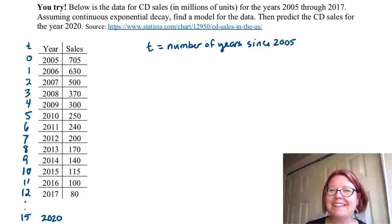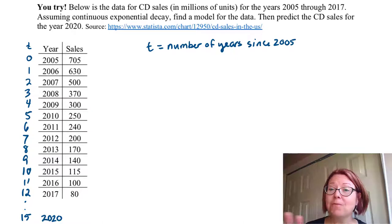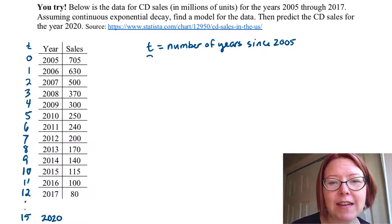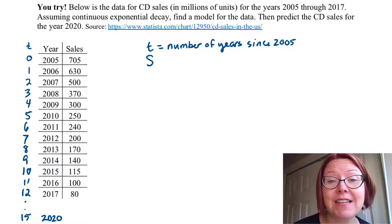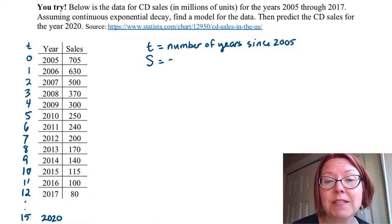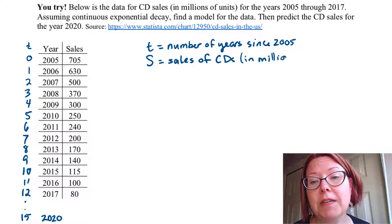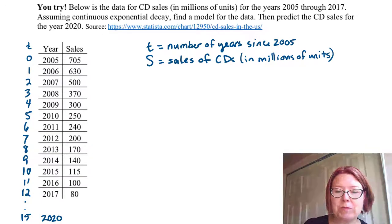All right, we're back. I have this data over in Desmos. I'm going to use a capital letter S — this is going to be the sales of CDs in millions of units. Let's go take a look in Desmos.